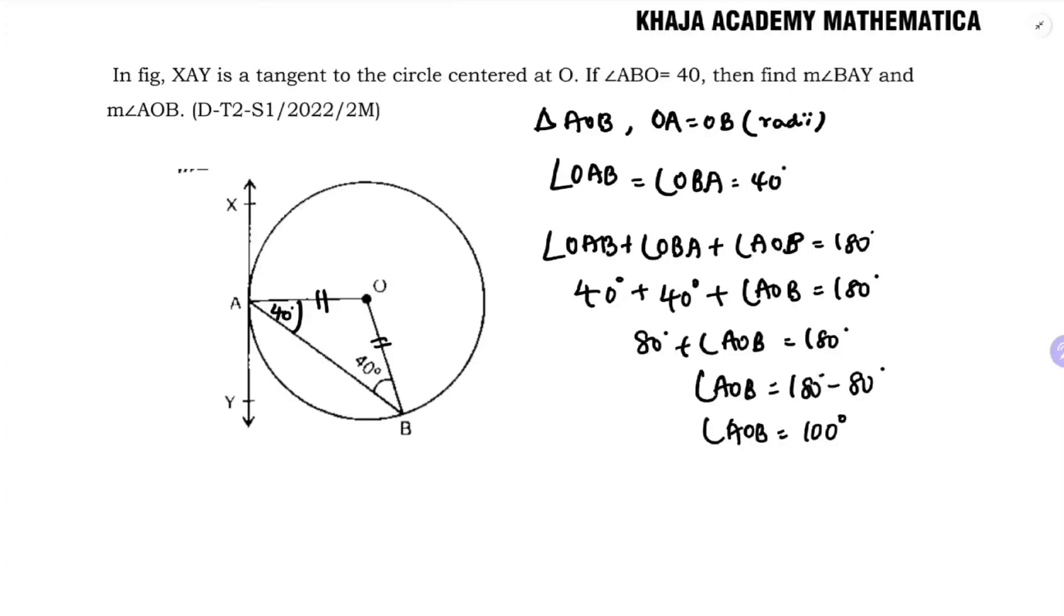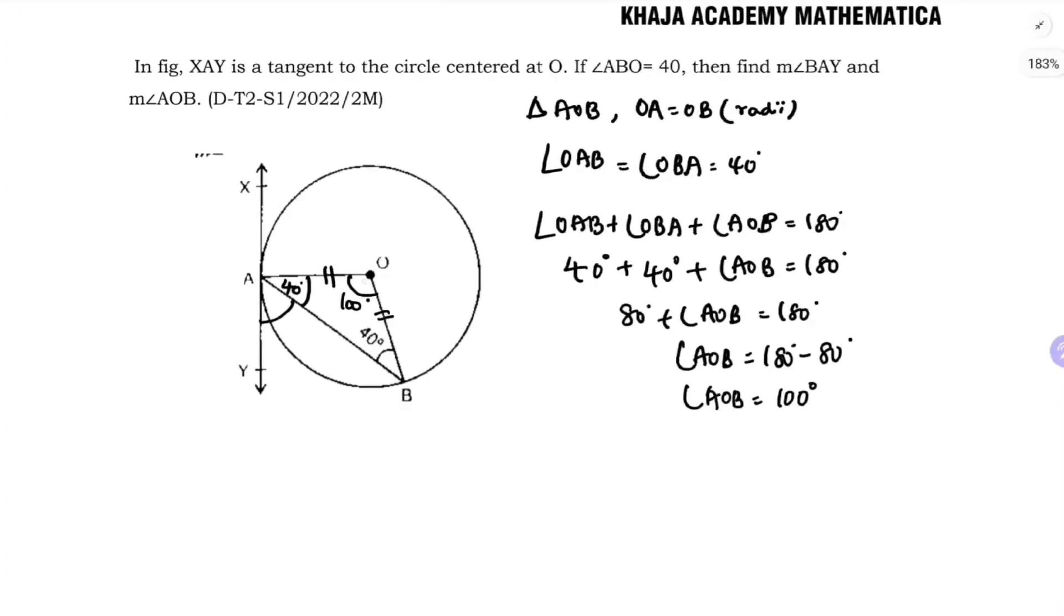Now we need to find the measure of angle BAY. To find this angle, I'll use the property that angle between radius and tangent is 90 degrees. So angle OAY is 90 degrees.